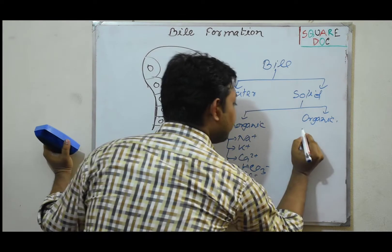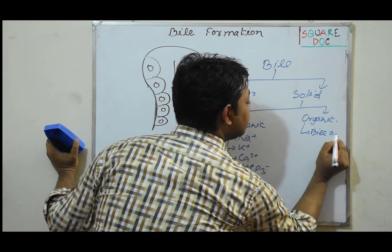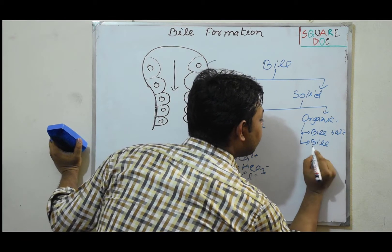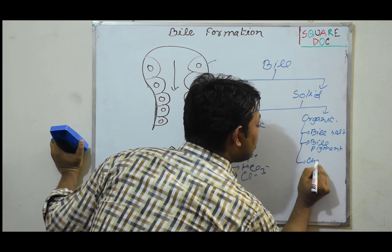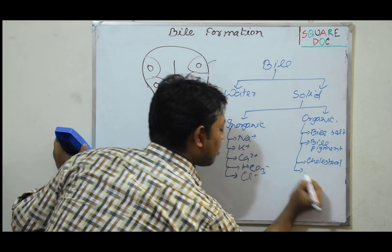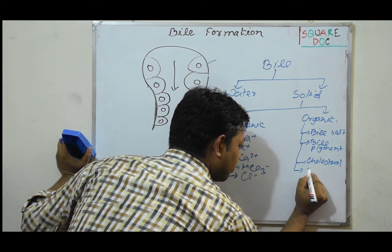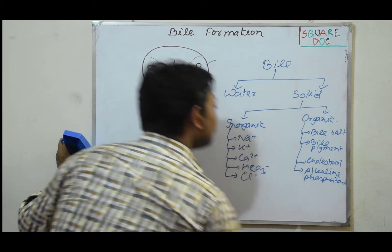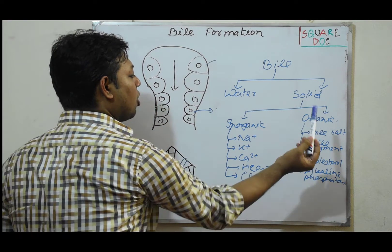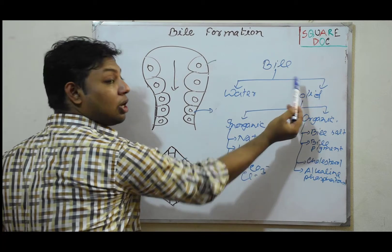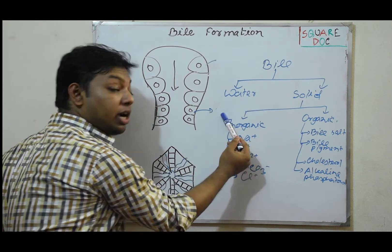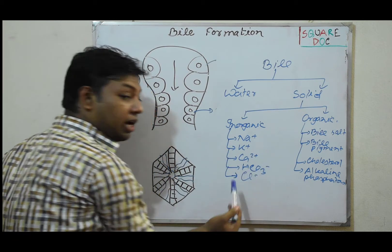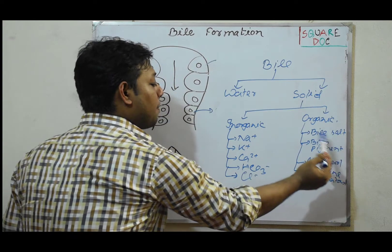An important inorganic component is bicarbonate, which makes bile alkaline. There is also chloride. The organic components include bile salt, bile pigment, cholesterol, and alkaline phosphatase.